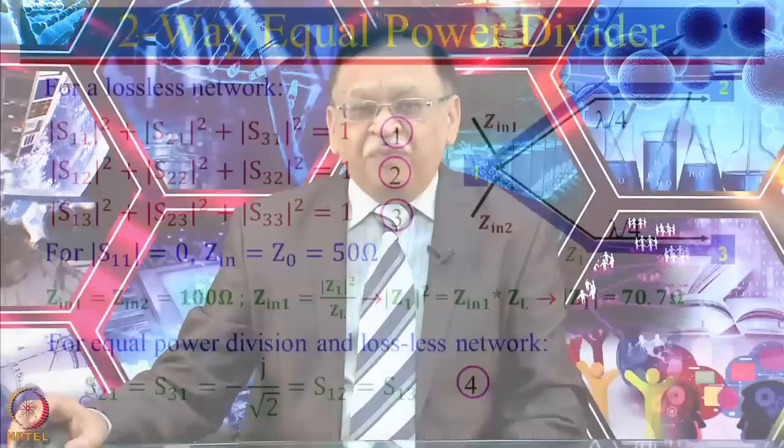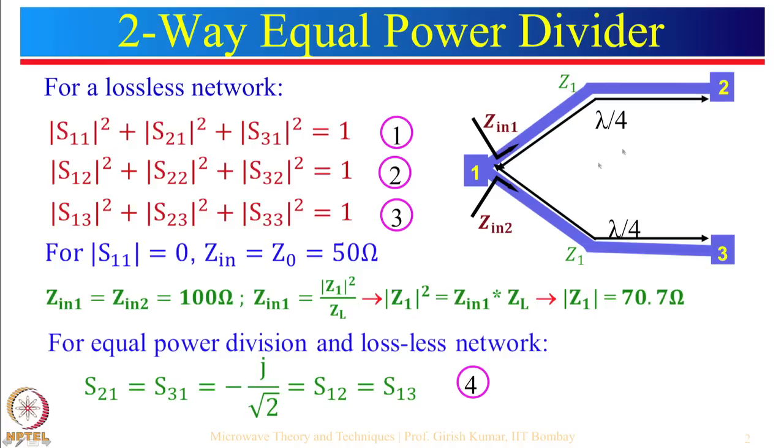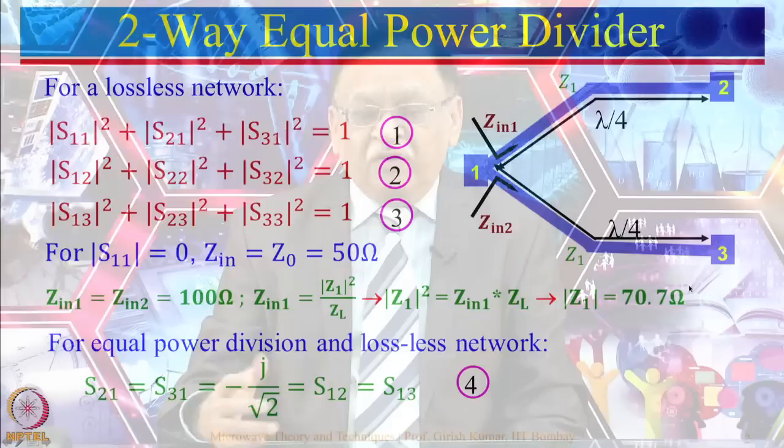First we will look at a two-way equal power divider. If we are giving an input at this port, then ideally half power should go here and half power should go over here, and nothing should reflect back. Where do we need this kind of power divider? For example, one application is if we want to feed a two-element antenna array — we give input at one place and the power is divided equally to the two elements. An element array could be 8×8 or 16×16, requiring a large number of power dividers, and majority of the time we feed these arrays using equal power division.